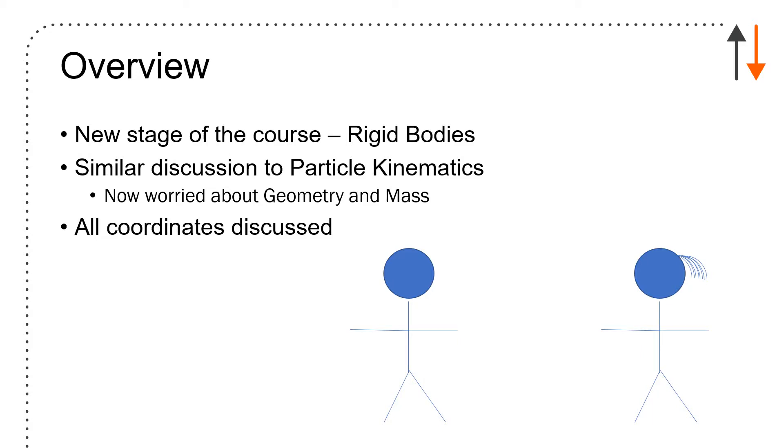When we start this part of the course, we're now switching from particle kinematics and kinetics to rigid body kinematics. What happens that's very different is we are now worried about geometry and mass. The big thing here in this chapter is getting used to the idea that rotations occur with all of the bodies that we're looking at. They have size. This is a completely new way of looking at the physics.